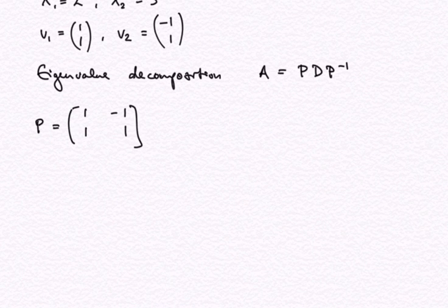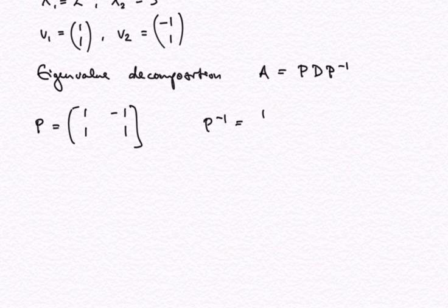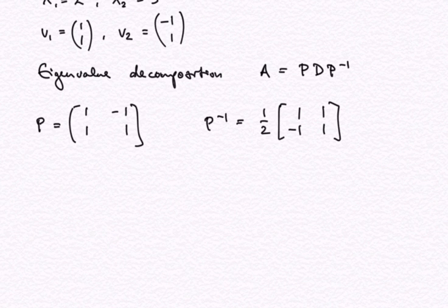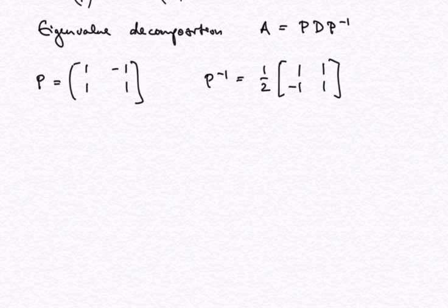P inverse — we can convince ourselves by watching my video, or perhaps this is an operation you are familiar with — is the matrix where essentially only the minus sign switches along the off-diagonal, and we multiply by one half. Convince yourself by multiplying P with P inverse to obtain the identity.